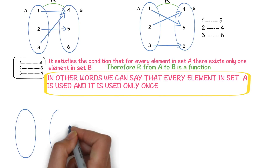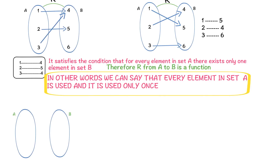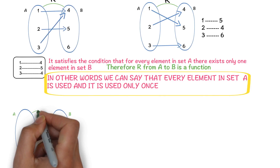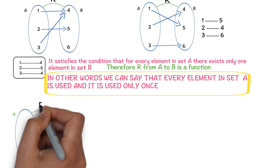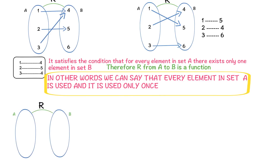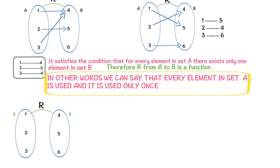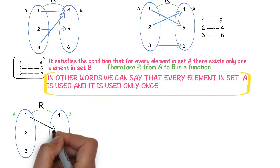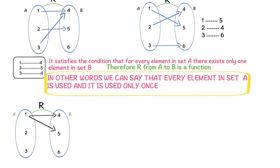We will try to understand the definition of function with one more example. Consider a relation R from A to B. Observe this relation — for every element in set A, there exists a unique element in set B or not. 1 is related to 4, 2 is related to 6, 3 is related to 6.